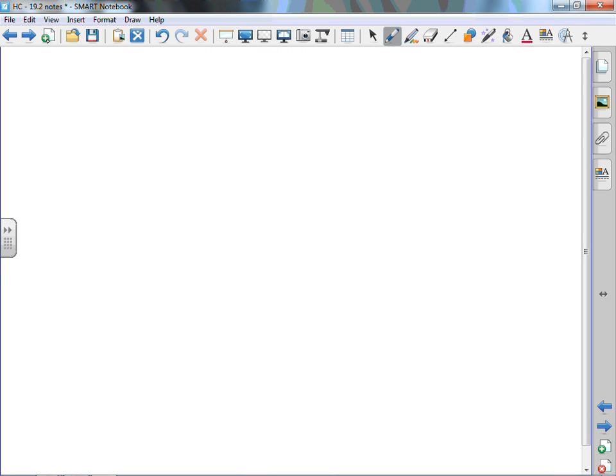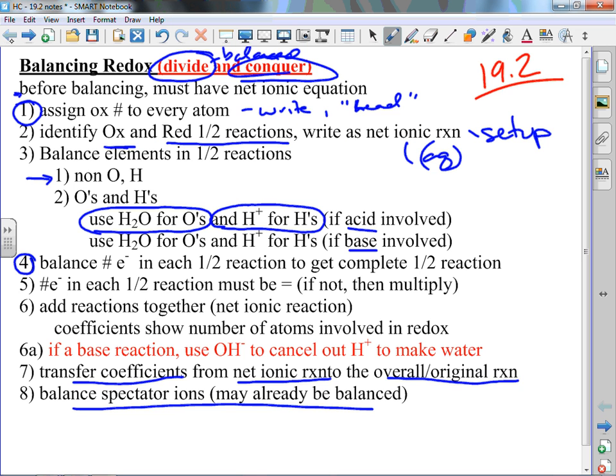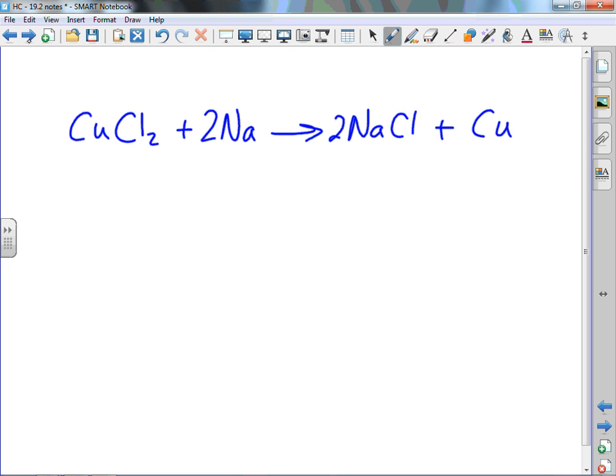All right, so let me give just a simple one here. Let's do copper chloride plus sodium metal. We'll get sodium chloride plus copper metal. Balance it. First thing we do, identify oxidation numbers. Assign them to every atom. I see sodium by itself, that's a zero. Copper by itself, that's a zero. Sodium in a compound, that's a plus. Copper in a compound with two chlorines, that's a two-plus charge. Dead giveaway for a redox.